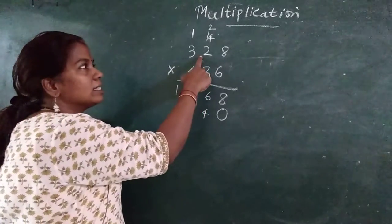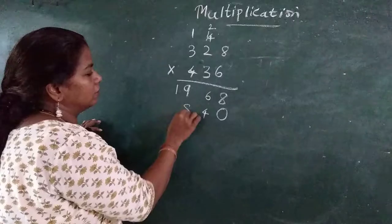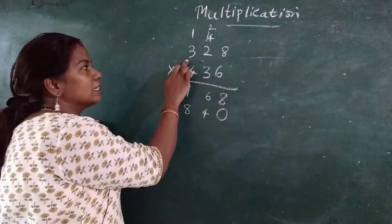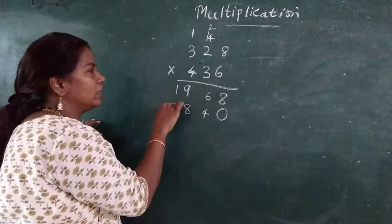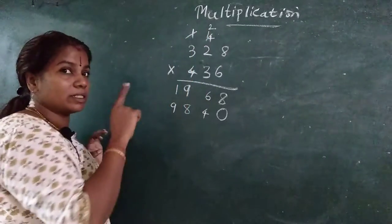3, 2's are 6. Plus 2, 8. Very good. 3, 3's are 9. This is the other numbers are known and written.